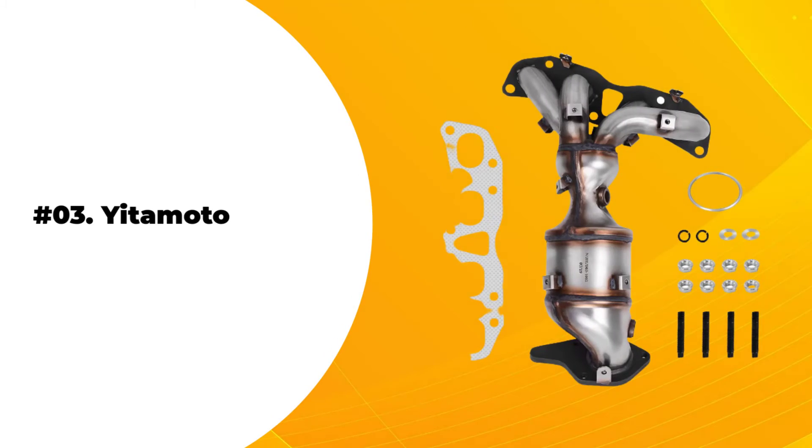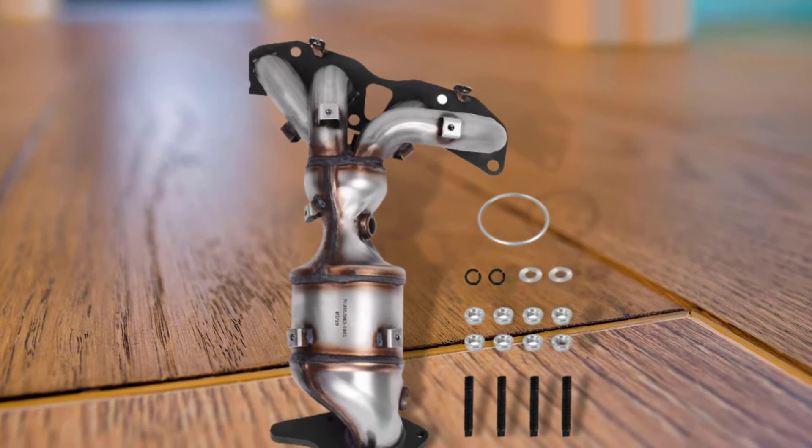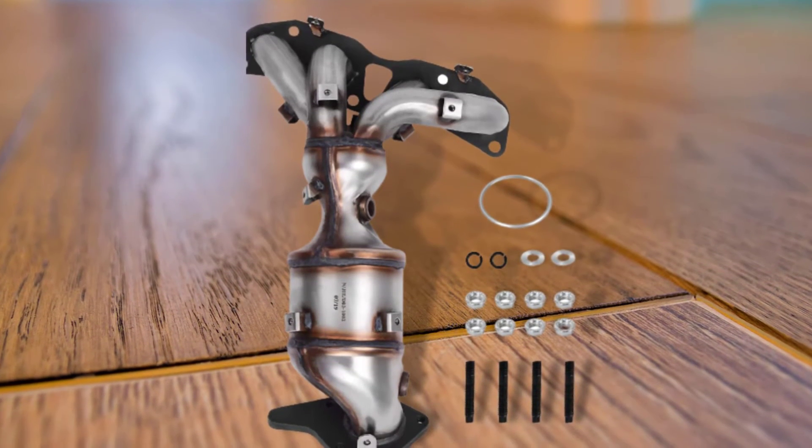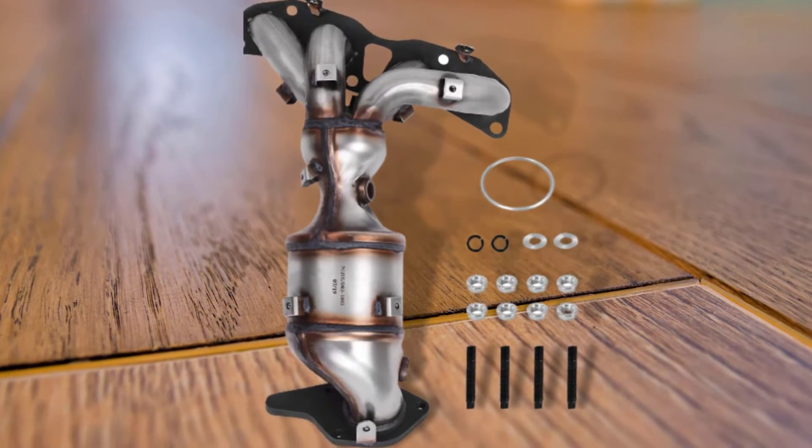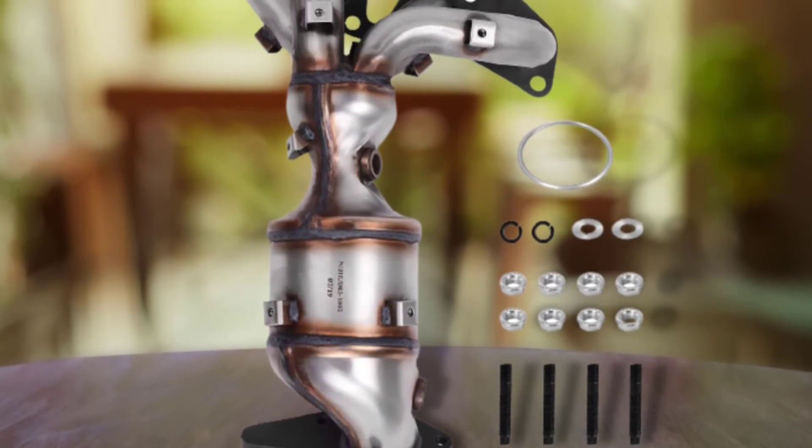At Number 3, Yitta Motor High Flow Catalytic Converter. Clean the exhaust of your Nissan Altima 2.5L for a better life with the Yitta Motor High Flow Catalytic Converter. It is an EPA-compliant unit that will help your car reduce harmful emissions.